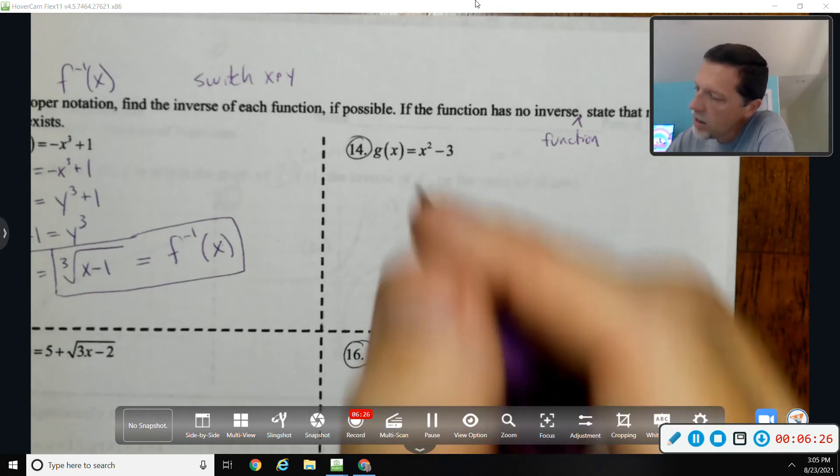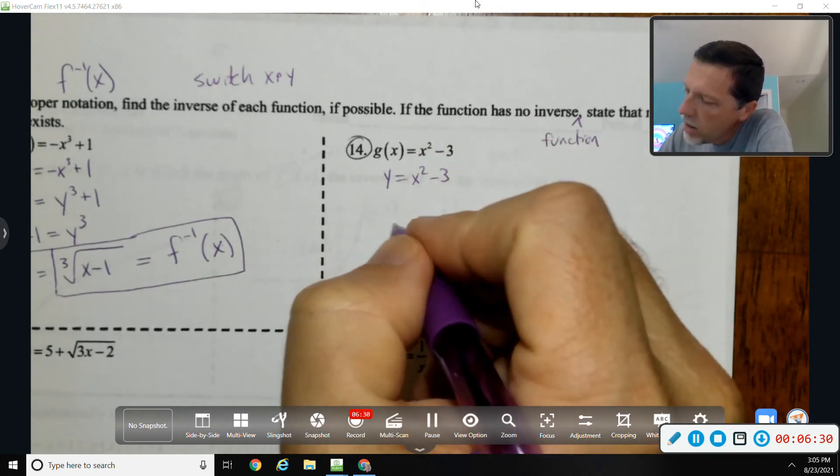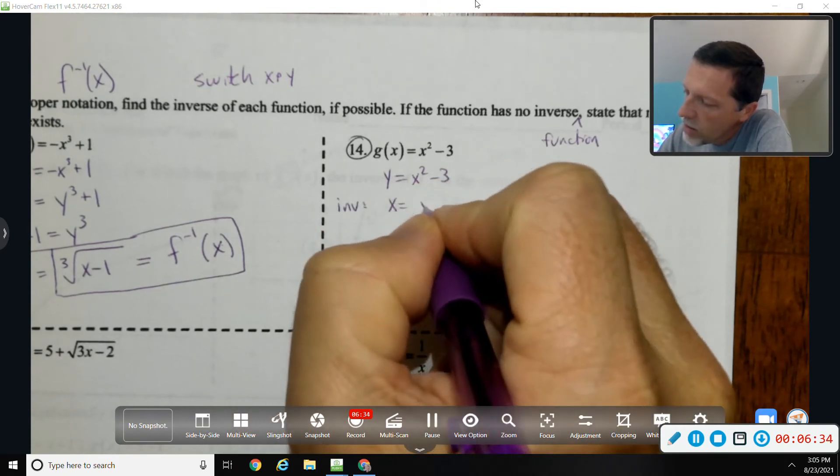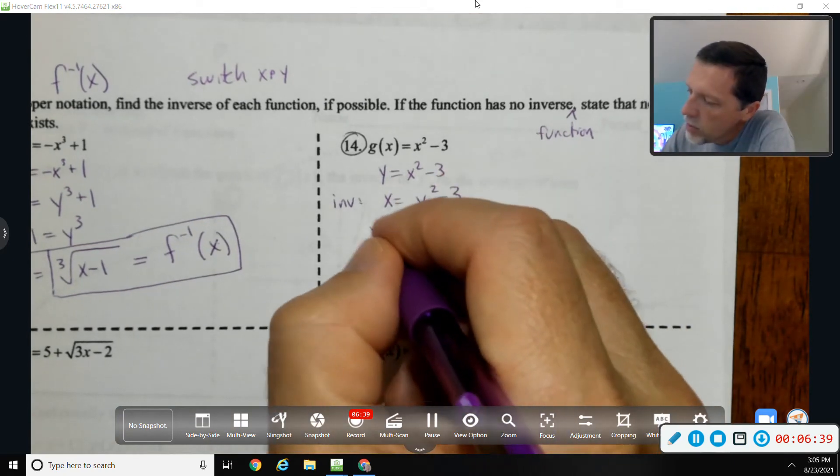Number 14: y equals x squared minus three. The inverse then is—switch x and y—so x equals y squared minus three. Add three to both sides.